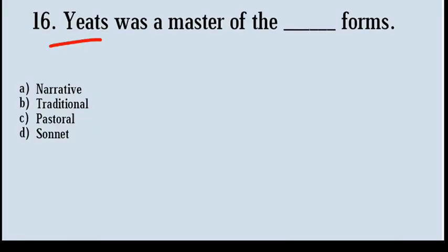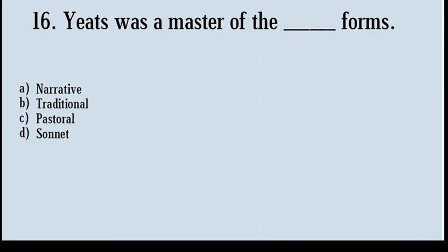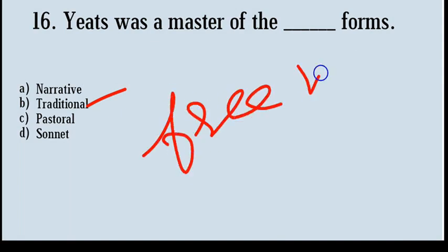Question number 16. W.B. Yeats was a master of what forms? Options: narrative, traditional, pastoral, sonnet. Correct answer: option number B, traditional forms. Unlike the other modernists who experimented with free verse, Yeats was a master of traditional forms.